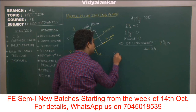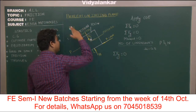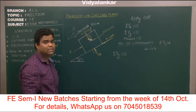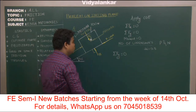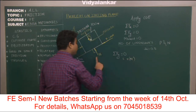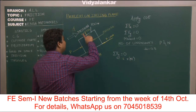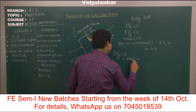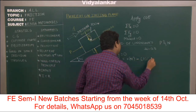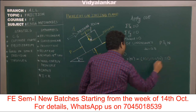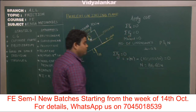Applying summation Fy equal to zero for vertical forces: upward forces are positive and downward forces are negative. N is going up, so we write plus N. The component 100 cos 30 is coming downwards, so we write minus 100 cos 30. Calculating this gives N equals 86.60 Newton. The unit of force is always Newton.